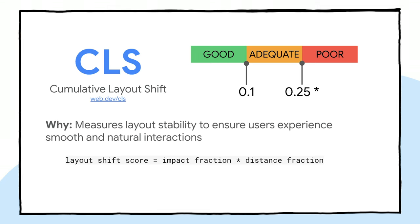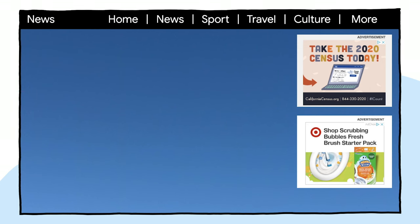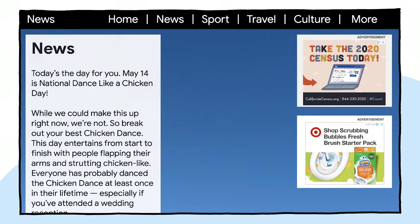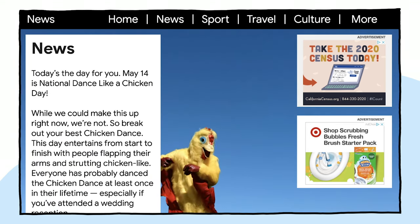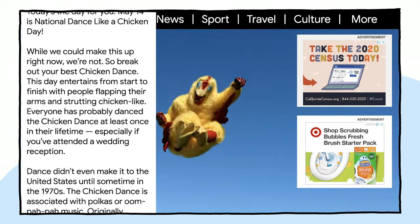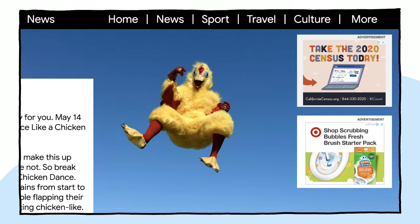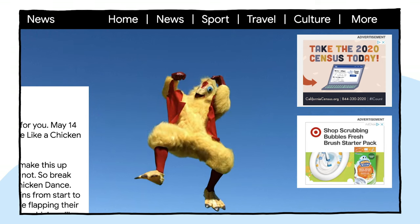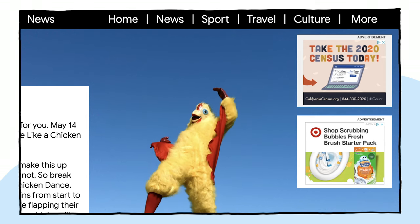CLS is a pretty important metric for measuring visual stability because it helps quantify all those times when we see really surprising shifts in the content on a page. It helps make sure that the page is as delightful as possible. Have you ever been reading an article online when all of a sudden something changes on the page and without warning the text moves and you've lost your place?